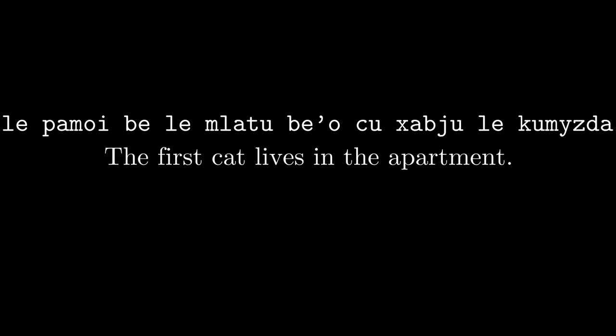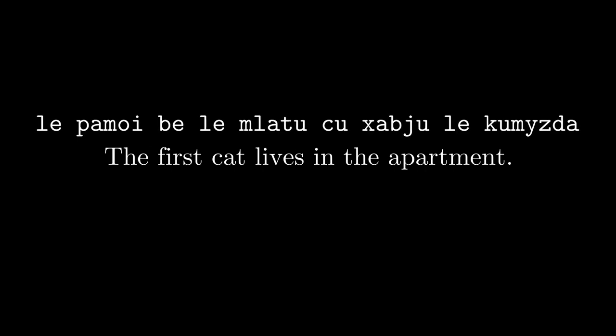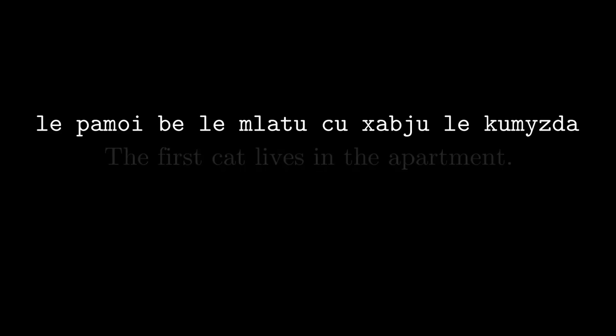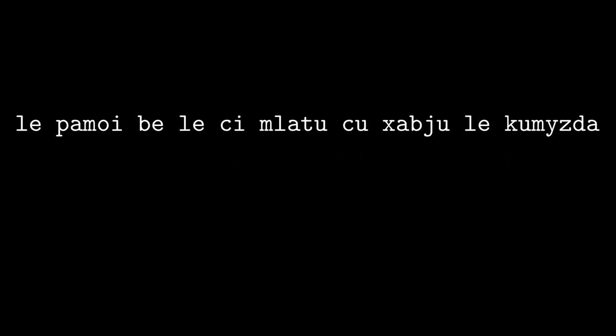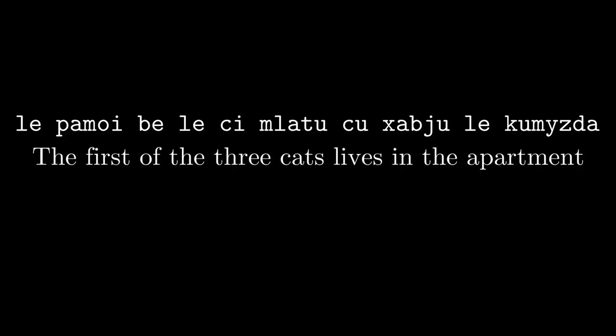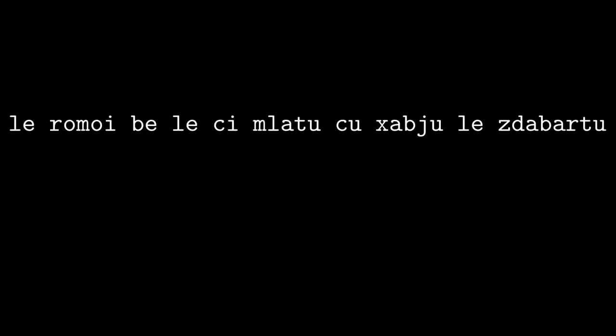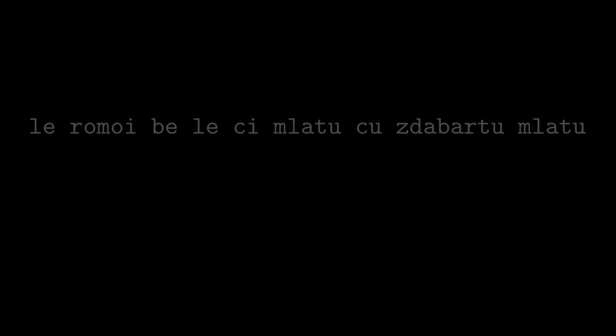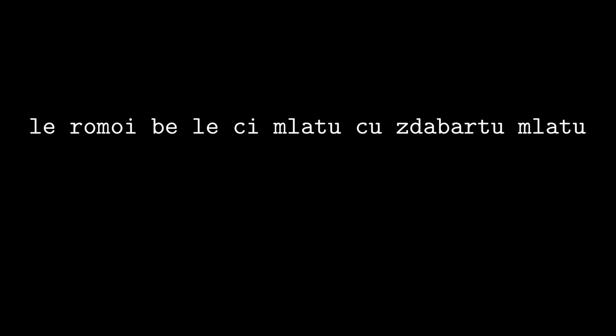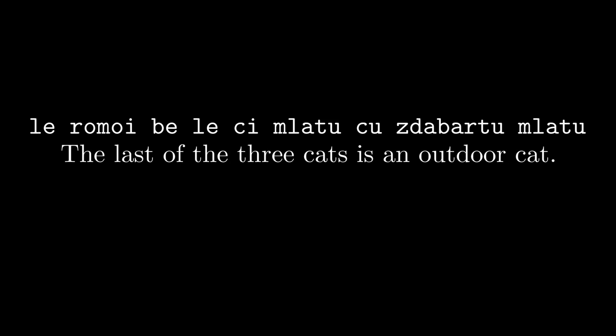We can safely leave be'o out because a selbri cmavo cuts off sumti from the selbri, implicitly terminating the be links as well. To say 'the first of the three cats lives in the apartment': 'le pamoi be le ci mlatu cu xabju le kumizda'. We can say last using 'romoi', which literally means all-th. So 'le romoi be le ci mlatu cu xabju le kumizda' means the last of the three cats lives outdoors, or the last of the three cats is an outdoor cat.